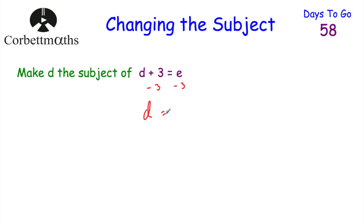In terms of the right hand side, we had E, and we're taking away 3, so we're just going to have E subtract 3, and that's it. As you can see, we've got D equals — that means D is the subject. So the answer is D equals E subtract 3. And if you got that, well done.